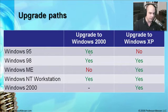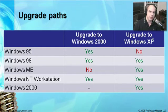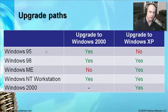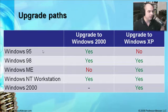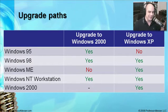To upgrade to Windows XP Professional — not Windows XP Home — you can upgrade from every operating system except Windows 95. Windows 95 was just so old that Microsoft decided there would be no direct path. You can go from 95 to 2000 and then from 2000 to XP, but you can't go directly to Windows XP. If somebody's still running Windows 95, there are bigger problems to worry about than whether you can upgrade to XP.